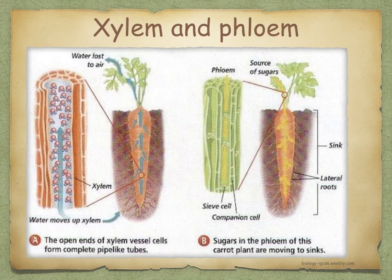Xylem and phloem are plant tissues composed of cells that are specialized for transport. These tissues are found throughout the plant in the roots, stems, and leaves. Xylem tissues transport water and mineral ions — the roots absorb water and mineral ions from the soil, which enter the xylem in the root and then travel upwards through the stem to the leaves, flowers, and fruits. Transport in the xylem is in one direction only: from the roots via the stem to the leaves.